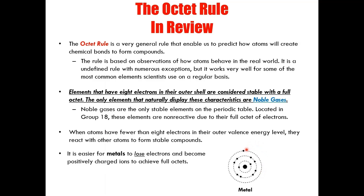If it loses this one electron, its outermost energy level will be empty. In fact, if it loses this one electron, this will no longer be its outermost energy level — for it to be an energy level, it must have an electron. So by losing this one electron, its new outermost energy level will be the level below, which of course has eight electrons. And so metals will oftentimes lose the electrons in their outermost energy level to expose a new level that is far more stable.